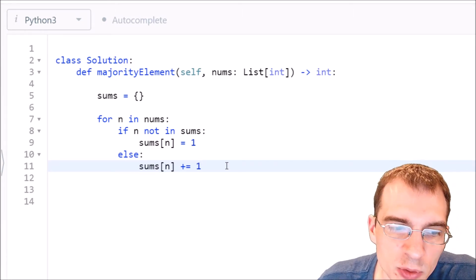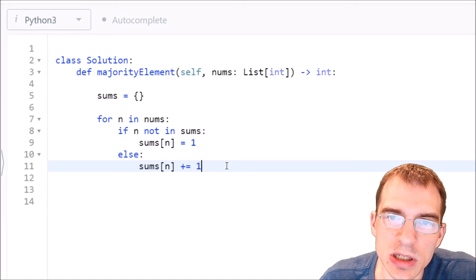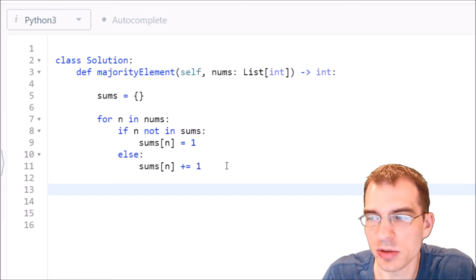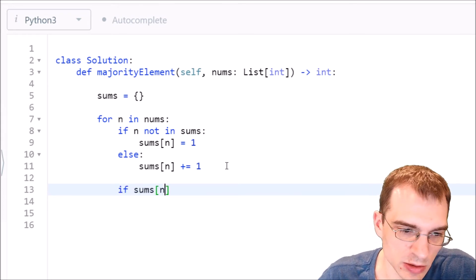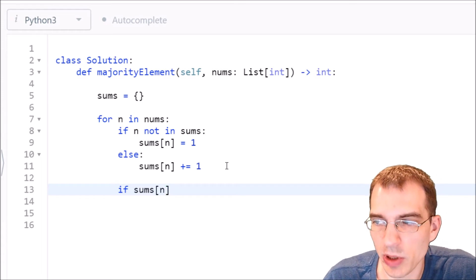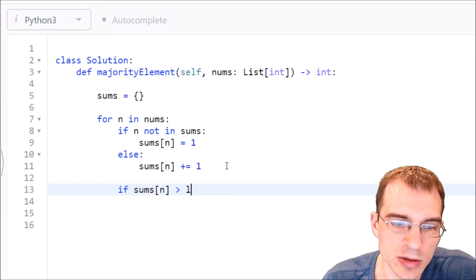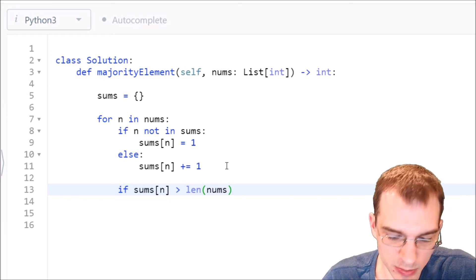And finally after we increment the value of sums n by 1, we can then check if the amount of times it's been seen is more than n divided by 2. And if it is, then we can simply return that result. So finally, we can say if sums n, the new value after we increment it by 1, is greater than the length of our input array. So len nums divided by 2.